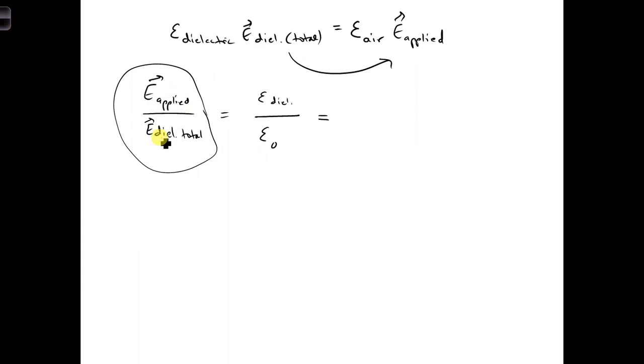If this is a ratio of the electric field, how much it changes, we can define the right side as also a value that describes how much the permittivity has changed in the dielectric, and that would be relative to free space. This is appropriately called the relative permittivity.